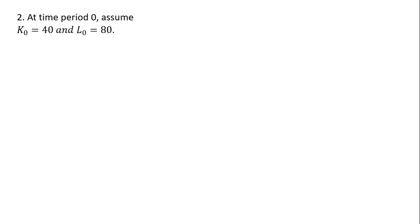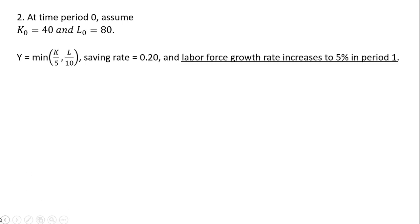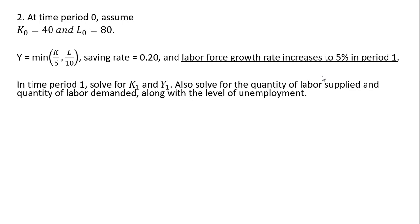Problem two: at time period zero, we have the same values for capital and labor, same production function, and same saving rate. But this time, let's assume that the labor force growth rate increases to 5 percent instead of 4 percent — it's going to increase to 5 percent in period one. In time period one, solve for the level of capital and output, the quantity of labor supplied and quantity of labor demanded, along with the level of unemployment. So there's going to be unemployment now.